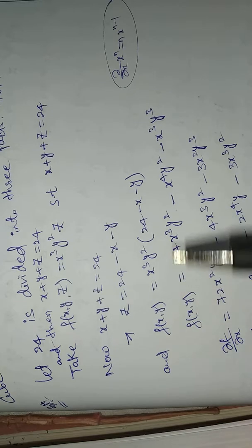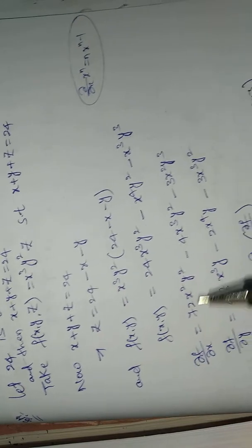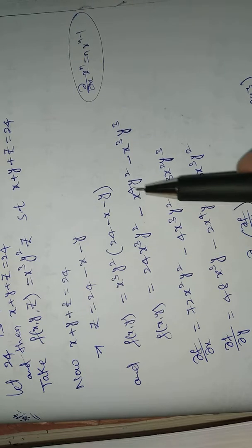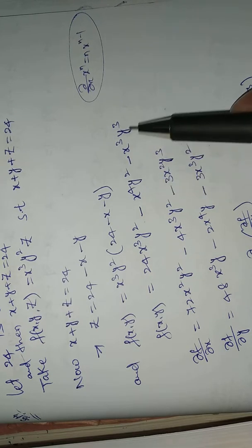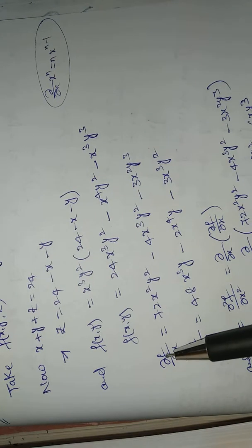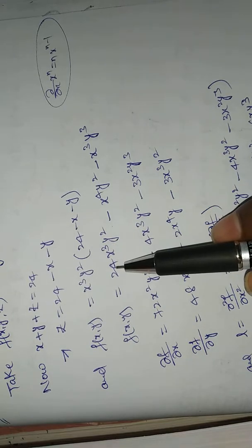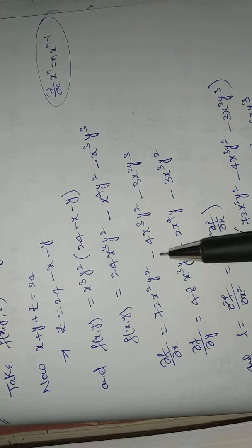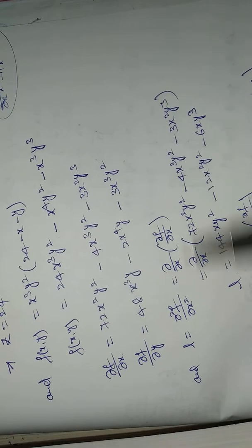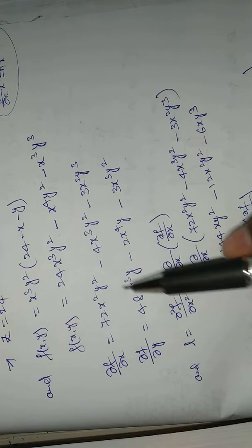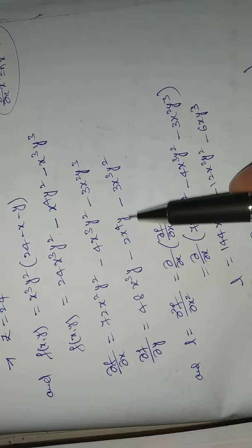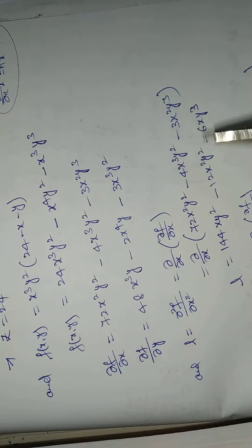Expanding the function: f(x, y) equals 24·x³y² minus x⁴y² minus x³y³. Now differentiating: ∂f/∂x equals 72x²y² minus 4x³y² minus 3x²y³, and ∂f/∂y equals 48x³y minus 2x⁴y minus 3x³y².